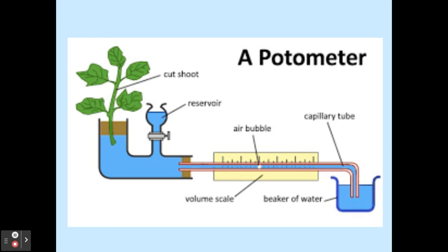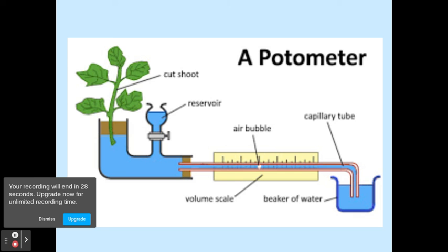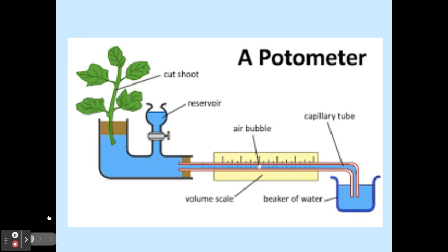For the potometer, you need to know how to use and set it up, and you can change multiple variables to see the impact upon photosynthesis. Cut the shoot stem at an angle to increase the surface area for the xylem, and cut it under water to prevent air bubbles entering the xylem. Make sure the leaves are dry, as wet leaves can impact transpiration. Ensure no air bubbles are in the apparatus, but do introduce at least one air bubble so you can measure how much water has been taken up by the plant.